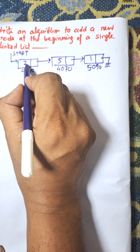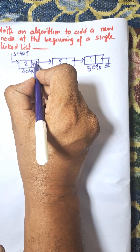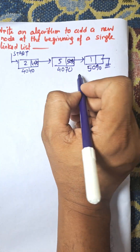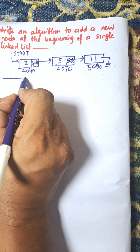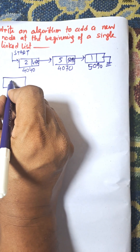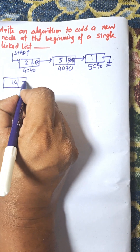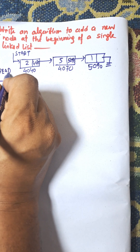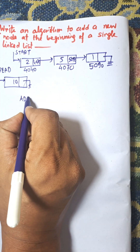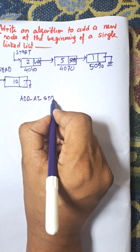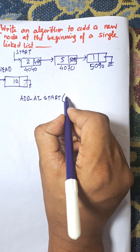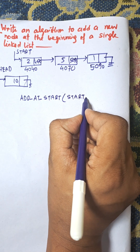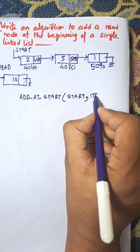Each node has an info part and a next part. The next part stores the next address: 4070, then 4090, and null for the last node. Suppose the new node has value 10 and we need to insert it at the beginning of the linked list. The function parameter 'start' is the starting pointer of the single linked list, and 'item' is the data to be inserted.